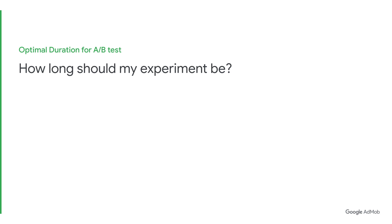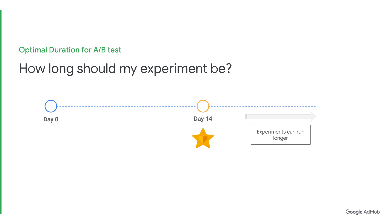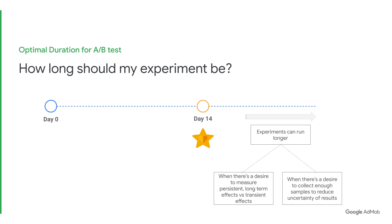Now that you know how to put together an A-B test, a natural question that follows would be: how long do I run this test? The general rule of thumb would be a minimum of 14 days, but this is contingent upon determining a variant as the leader. Some experiments do end up running for longer — these scenarios happen when there is a desire to measure persistent, long-term effects versus transient effects, for example seasonality or novelty effects, or when there is a desire to collect a larger sample to reduce uncertainty of results.